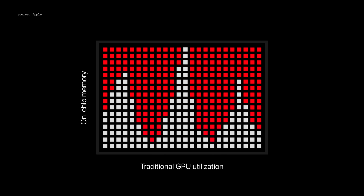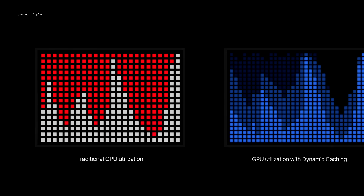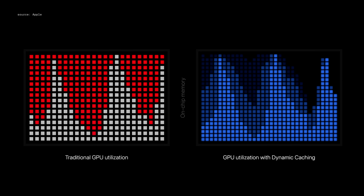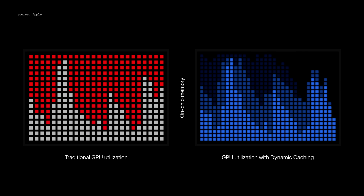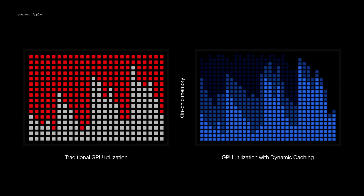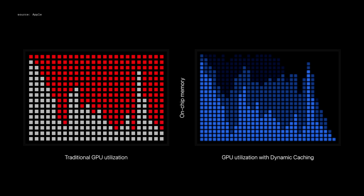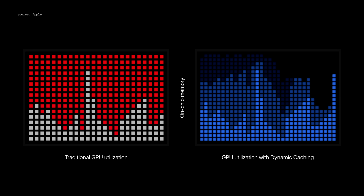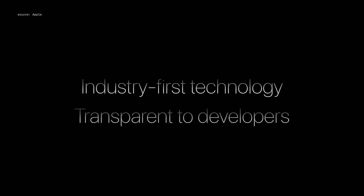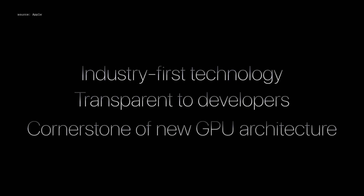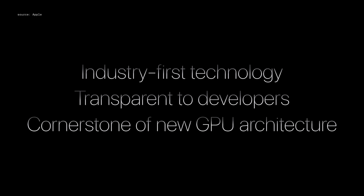In our next-generation GPU, local memory gets dynamically allocated in hardware in real-time. So only the exact amount of memory that is needed is used for each task. This dramatically increases the average utilization of the GPU, which significantly increases performance for the most demanding pro apps and games.